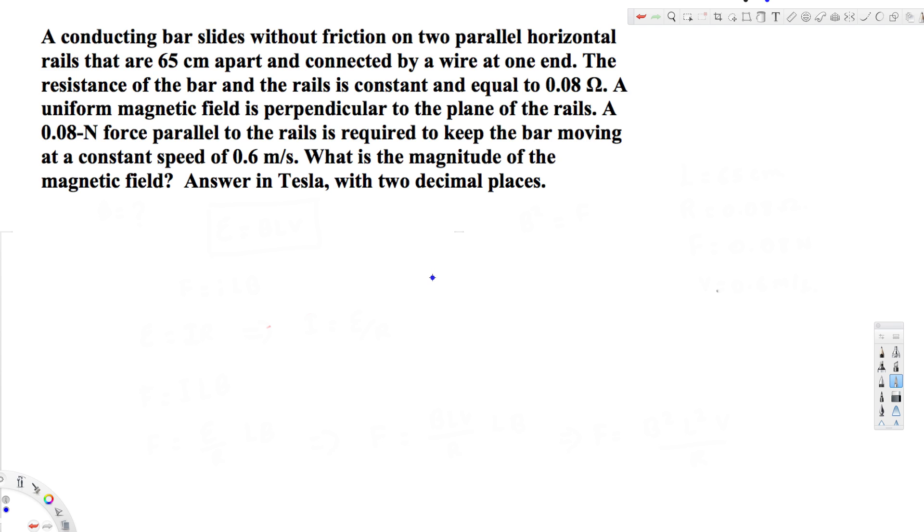A 0.08 newton force parallel to the rails is required to keep the bar moving at a constant speed of 0.6 meters per second. What is the magnitude of the magnetic field?